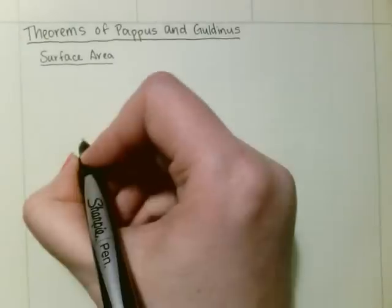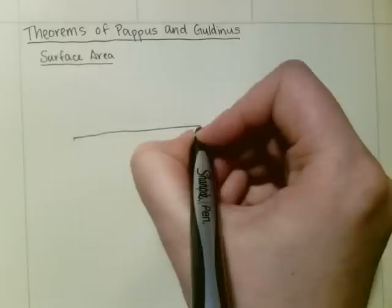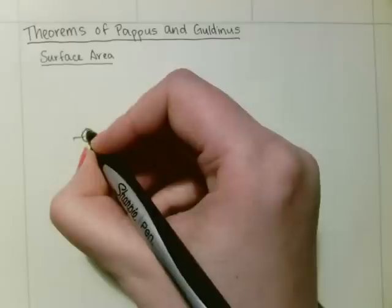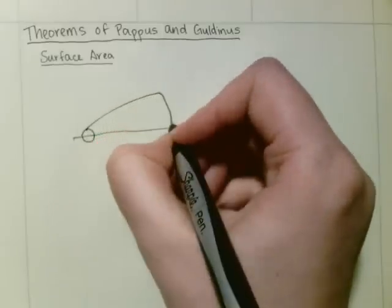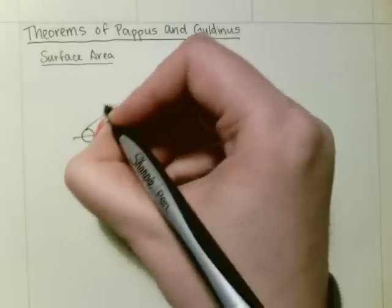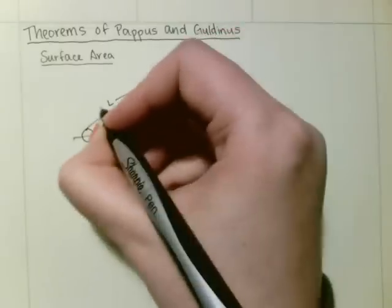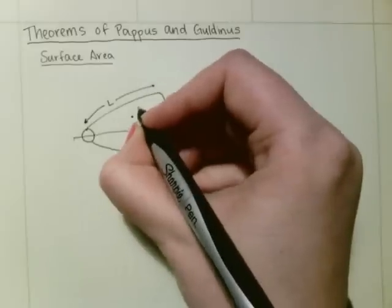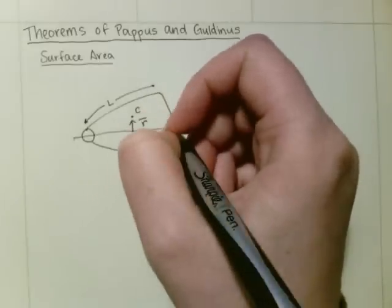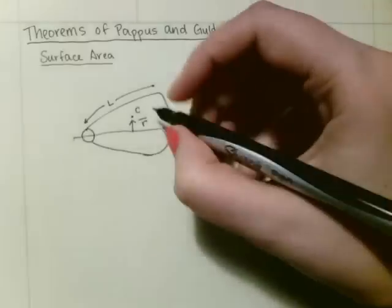Say you had a shape, this length L, the centroid, which is located r̄ away from the axes.